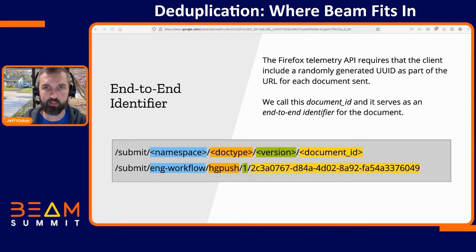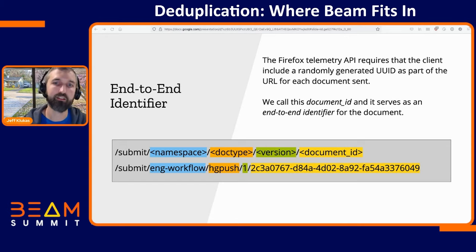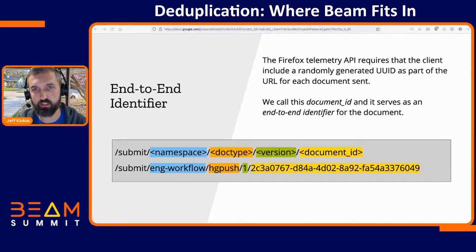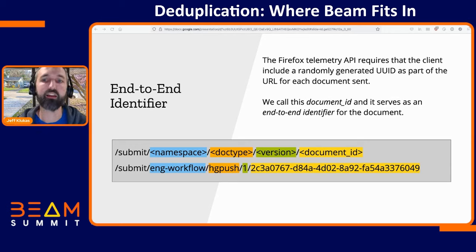The Firefox telemetry API is an HTTP API where Firefox clients submit telemetry by hitting an HTTP service using URLs that include a randomly generated UUID as part of the URL for each document it sends. We call this the document ID, and it serves as an end-to-end identifier for the document.